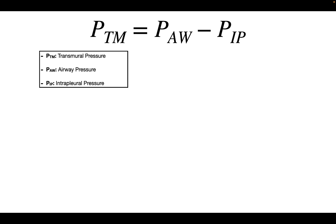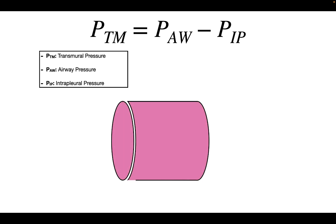The transmural pressure equation tells you how to calculate the pressure difference across the wall of a vessel or airway. The transmural pressure equals the airway pressure minus the intrapleural pressure. Inside the airway, the airway pressure acts to expand it, while the intrapleural pressure acts as an opposing force to collapse it. So it's the difference between these two pressures that determines whether the airway expands or collapses. When the transmural pressure is positive, the airways expand; when it's negative, the airways collapse.